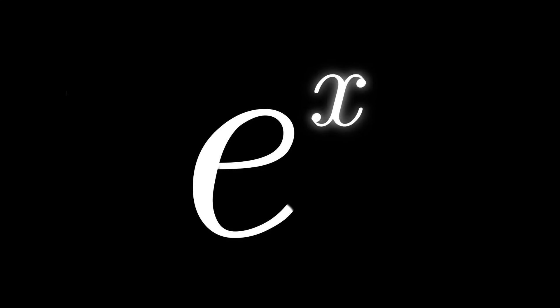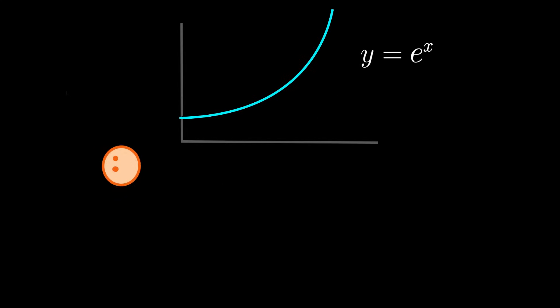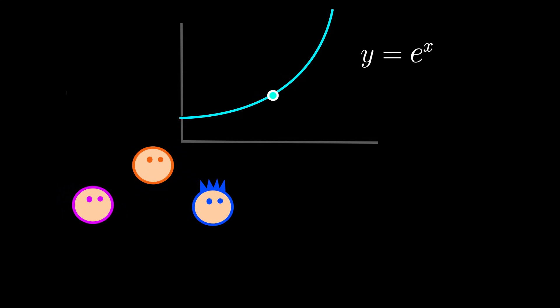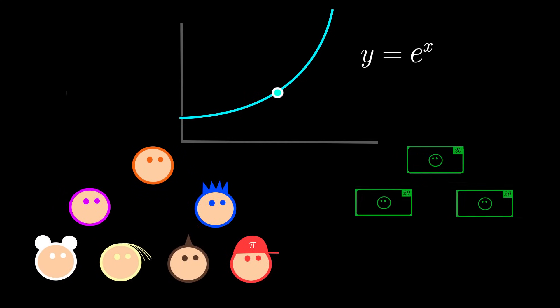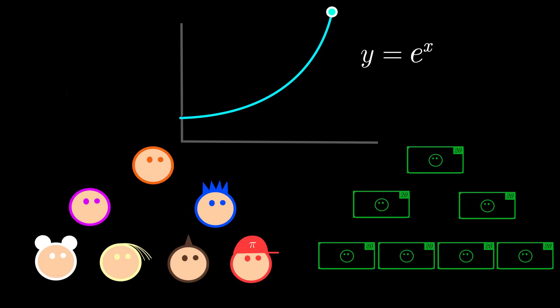Exponential functions are some of the most important functions in mathematics and can be used to model all sorts of different scenarios, from measuring population growth and change like for bacteria or a certain virus, all the way to the financial sector such as interest from banks. Let's focus on the financial side and talk about compound interest, which is historically where the number e, or Euler's constant, was first discovered.